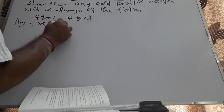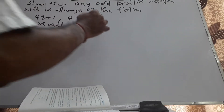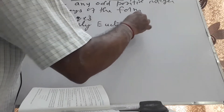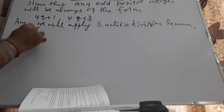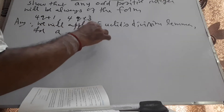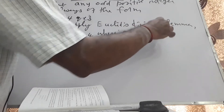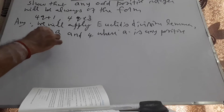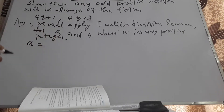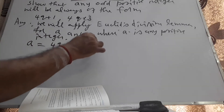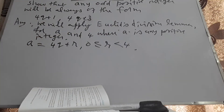We will apply Euclid's division lemma, or Euclid's algorithm, in general, as I told you in the previous video. For A and 4, where A is any positive integer, I will be able to write A as 4Q+R. I recall Euclid's division lemma: if you are given two positive integers a and b, with a greater than b, I can identify two numbers Q and R such that A equals BQ plus R.